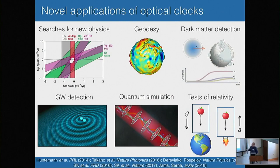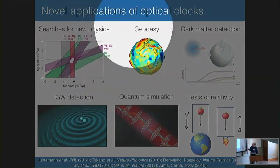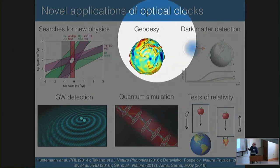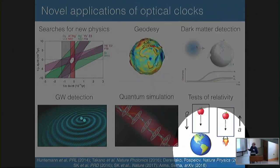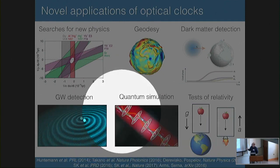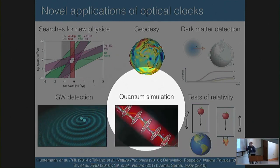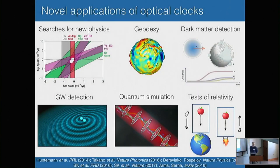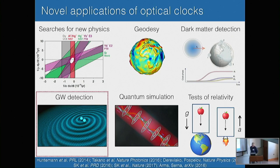This is my own personal take on some of the interesting emerging applications of optical clocks: searches for new physics, geodesy as we heard about from Andrew, dark matter detection, tests of relativity, gravitational wave detection, and also quantum simulation — which is what I spent most of my postdoc in Jun's group working on. While working with Jun during my postdoc, we were trying to think about how you might actually use optical clocks to do gravitational wave detection. That's what I want to focus on first.